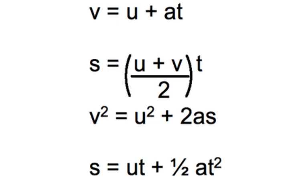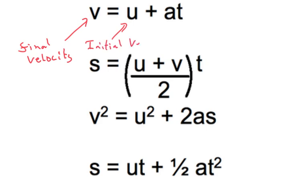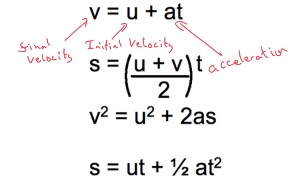So what do these different terms mean? Well, v always stands for the final velocity. U is the initial velocity. A is acceleration. And then we've got t for time, and s is for displacement.